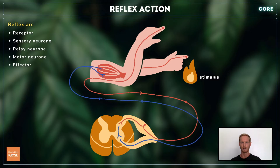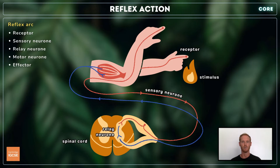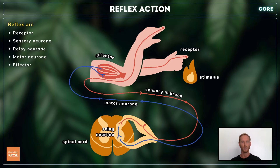The process begins with a stimulus, which in this case is a rapid change in temperature. Receptor cells in the skin detect the stimulus and convert it into an electrical impulse which is transmitted by a sensory neuron to the spinal cord. The sensory neuron passes it on to a relay neuron which in turn passes it on to a motor neuron. The motor neuron then carries the impulse to an effector, which in this case is a muscle in the arm. The impulse causes the muscle to contract and the hand to be pulled away from the fire. By bypassing the brain in this way the response of the effector to the stimulus is both automatic and almost immediate.